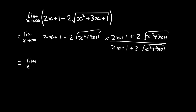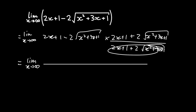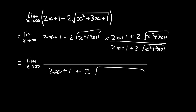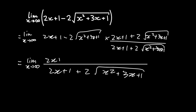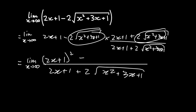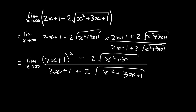So I can say the limit as x approaches infinity, where my denominator stays as 2x plus 1 plus 2 into the square root of x squared plus 3x plus 1. In the numerator, I'll square the first term — 2x plus 1 squared — and subtract the second term squared: 2 into the square root of x squared plus 3x plus 1, all squared.